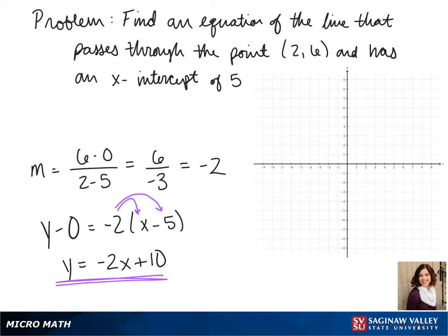To see what our graph would look like, we can plot the points we're given and our y-intercept of 10, the point we're given at 5, 0, and 2, 6. And there's our line.